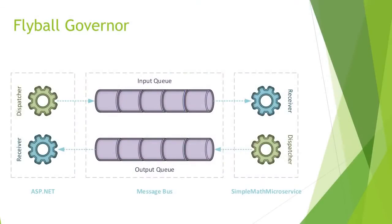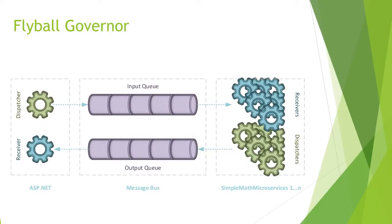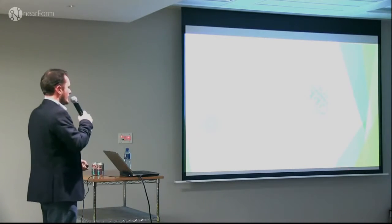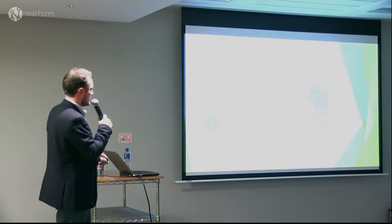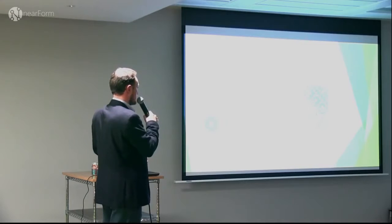The flyball governor pattern is very similar to the decoupled middleware pattern, but it turns a single receiver into multiple receivers. We have our ASP.NET application with dispatcher, input queue, and now potentially multiple receivers depending on the load — depending on how busy the input queue is. Similarly, dispatchers can be scaled out accordingly, and we achieve instances where the client is none the wiser, nor does any developer, DevOps engineer, or otherwise have to manually intervene.